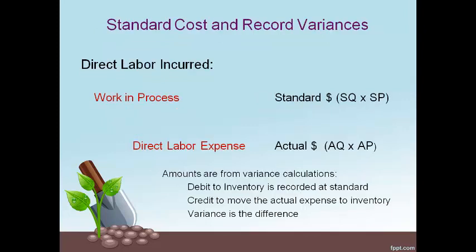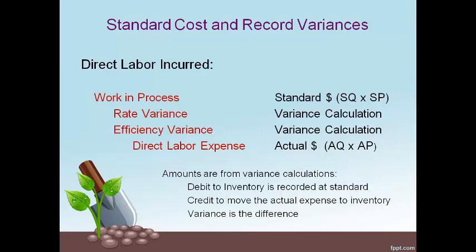Direct labor works and the product cost is moved out of the expense and into work in process. The inventory account always changes by the standard or estimated amount. The credit is always an actual amount, and the difference in actual and standard is the two variances. Unfavorable variances are recorded with a debit and favorable variances are recorded with a credit. All amounts are calculated on the variance computation.